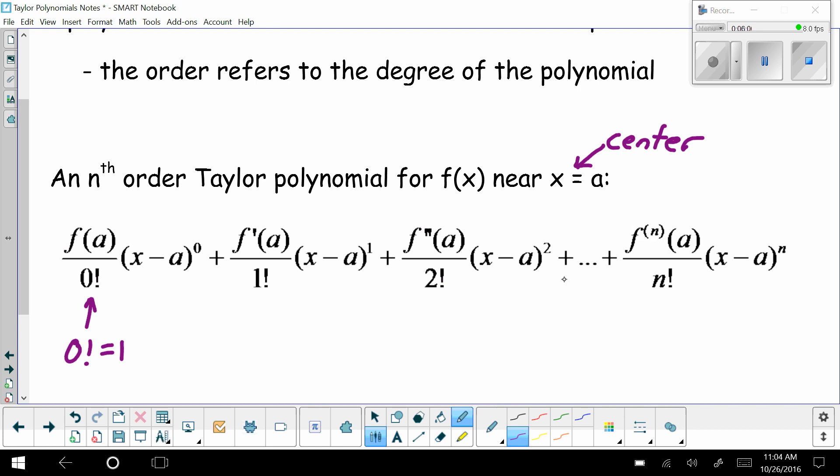If I kept going to a third order, I'd have the third derivative with a plugged in over 3 factorial times x minus a to the 3rd power. So what it is is we're adding up terms where we're doing an nth derivative with a plugged in over n factorial times x minus a to the nth power. So we do have a pattern to how we build these.